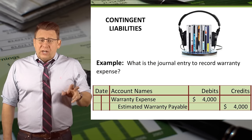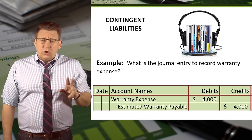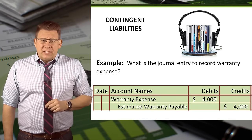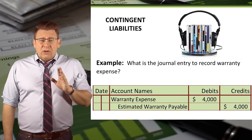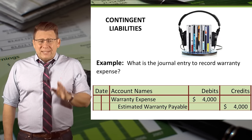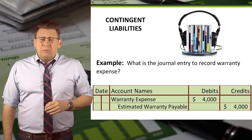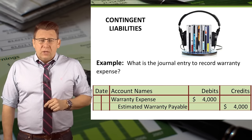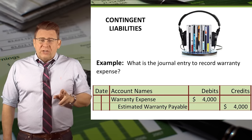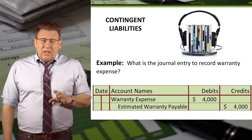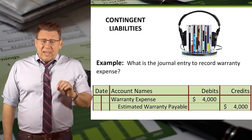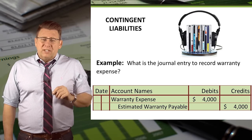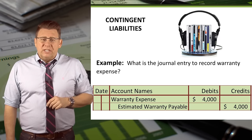The journal entry to record the expense is a debit to warranty expense and a credit to estimated warranty payable for $4,000 each. This journal entry would be made during the same period we recorded the sale of the 10,000 CDs.